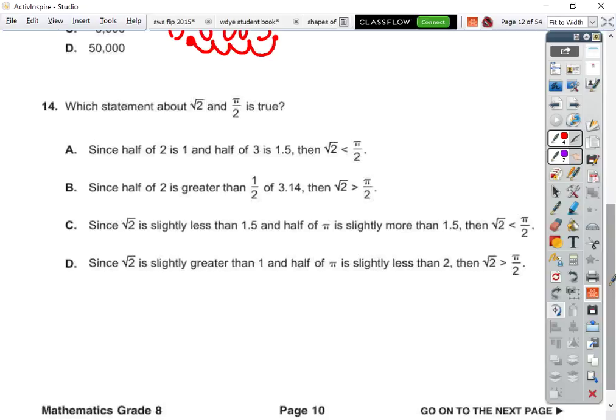Since half of two is one, and half of three is 2.5, then the square root of two is less than pi over two. Square root does not mean half. So since they are using half here, we know this is not mathematically correct. Since the square root of two is slightly less than 1.5, and half of pi is slightly more than 1.5, this sounds pretty good. So it's C?